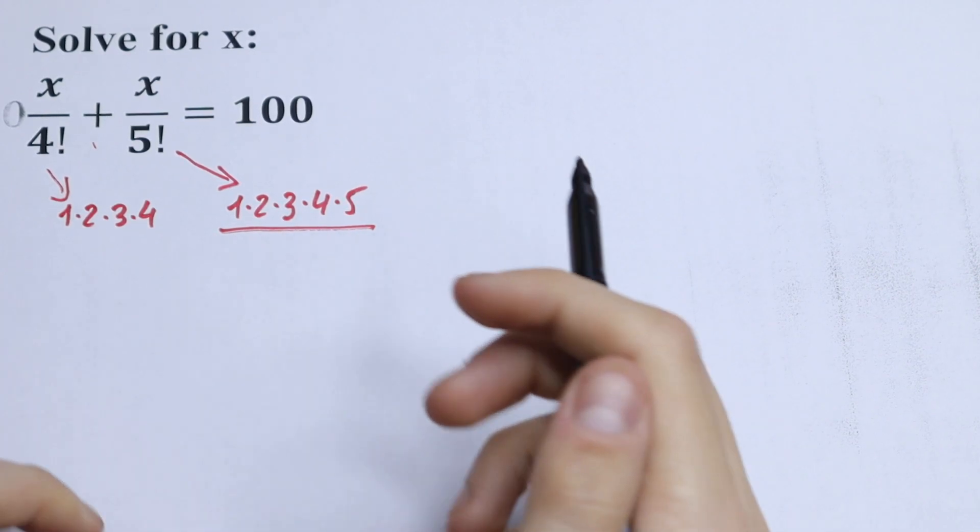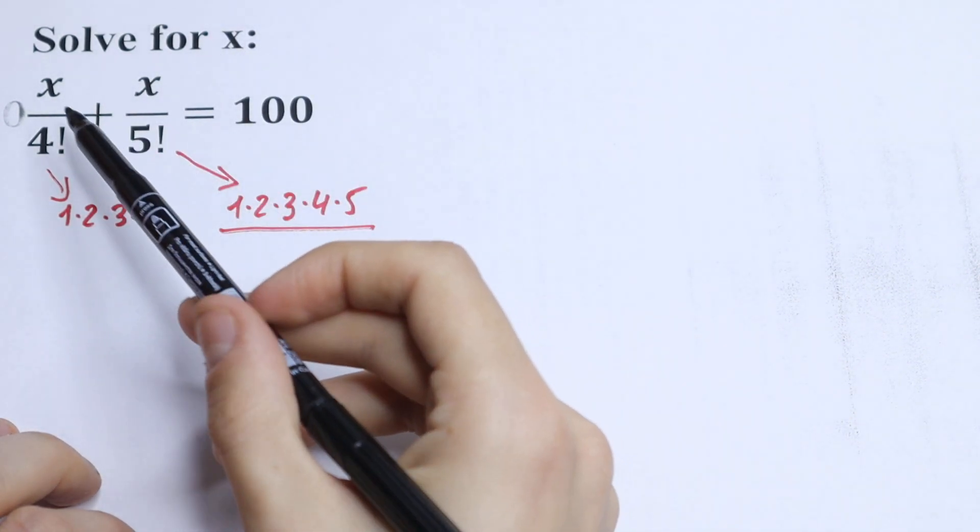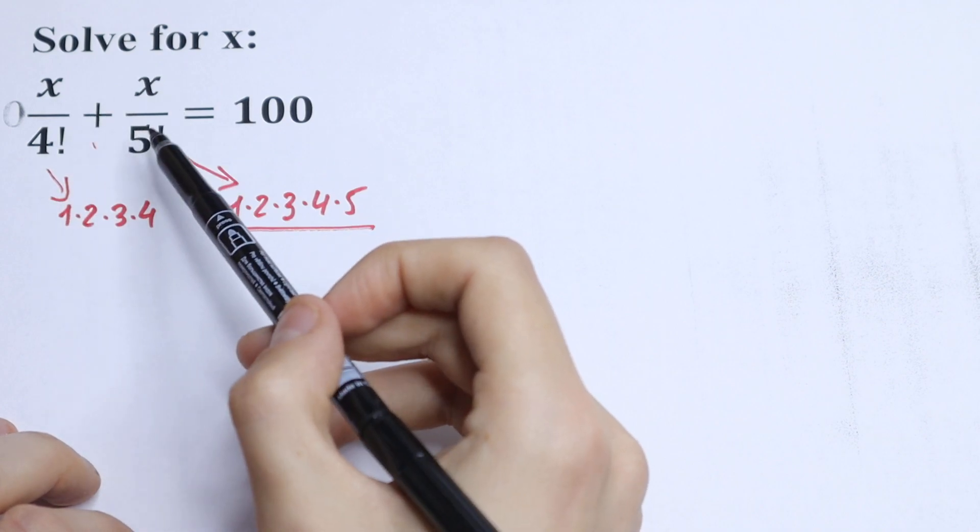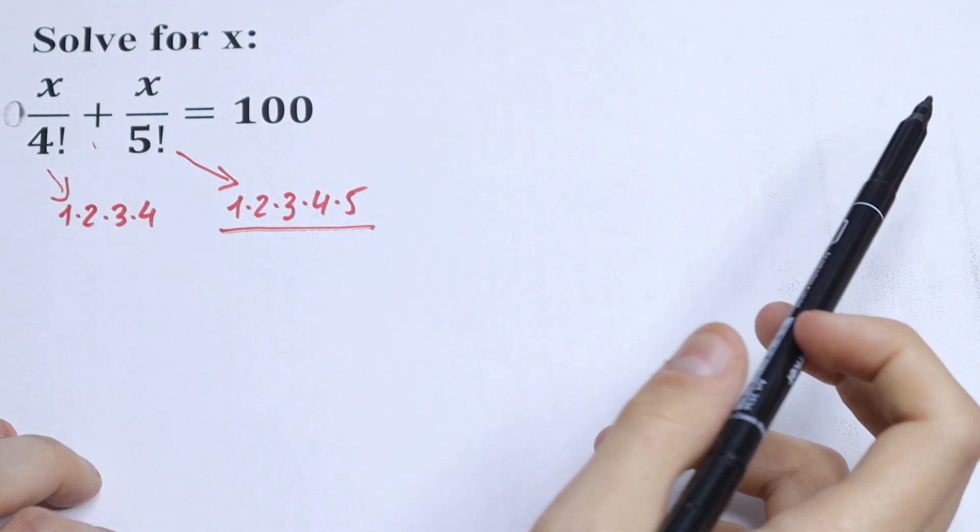Hello everyone, welcome back to MathMode. Here we have an interesting equation: x over 4 factorial plus x over 5 factorial equals 100.